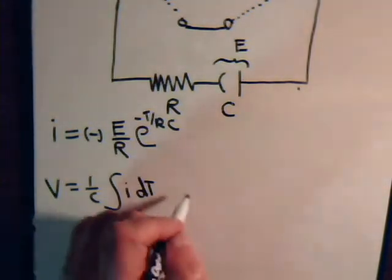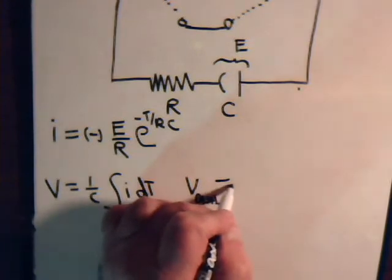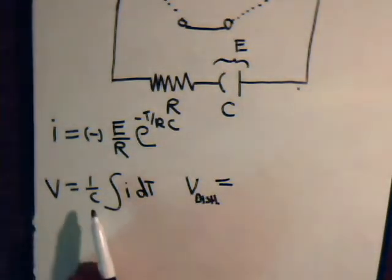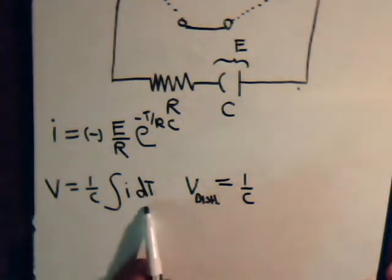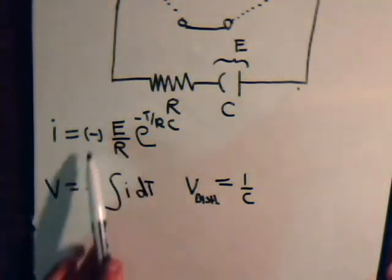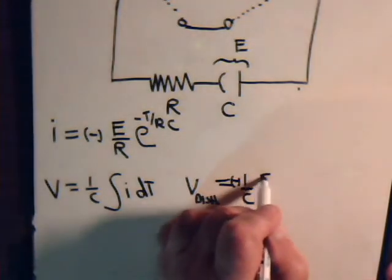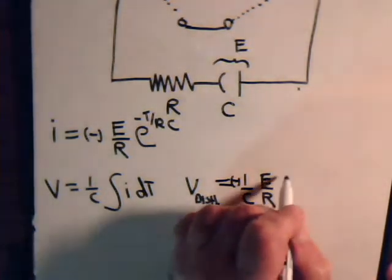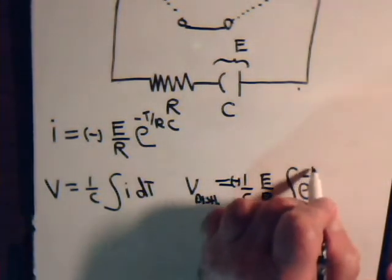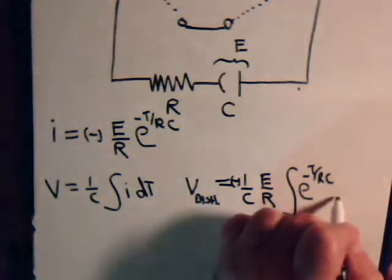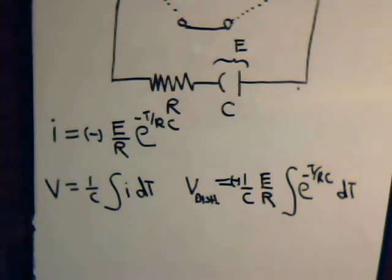Now while the capacitor is discharging, i equals the discharging current expression. So for the discharge voltage V_d we have V_d = (1/C) times the integral of i·dt, where i is minus E over R times e to the minus t divided by RC. Since E over R is constant, we have minus E over R times the integral of e to the minus t over RC dt.